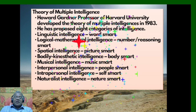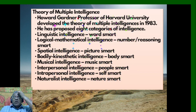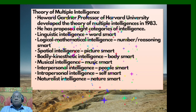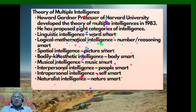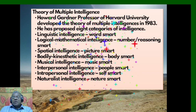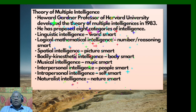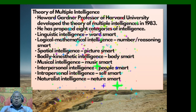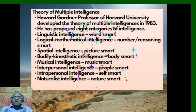Howard Gardner, Professor of Harvard University, developed the Theory of Multiple Intelligences in 1983. He proposed eight categories: Linguistic Intelligence (word smart), Logical-Mathematical Intelligence (number/reasoning smart), Spatial Intelligence (picture smart), Bodily-Kinesthetic Intelligence (body smart), Musical Intelligence (music smart), Interpersonal Intelligence (people smart), Intrapersonal Intelligence (self smart), and Naturalist Intelligence (nature smart).